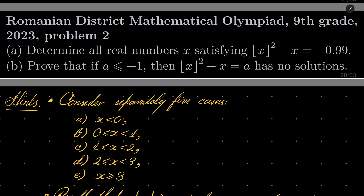First part: we wish to find all the real numbers x satisfying the following equation — floor of x squared minus x equals minus 0.99. And part b: prove that if a is less than or equal to minus 1, then floor of x squared minus x equals a has no real solutions.